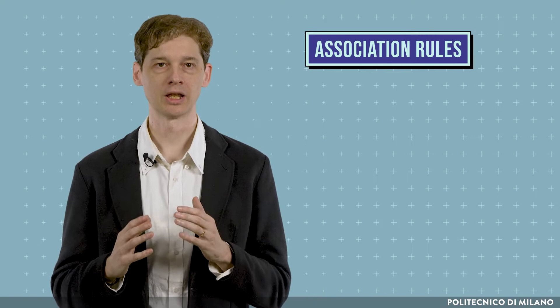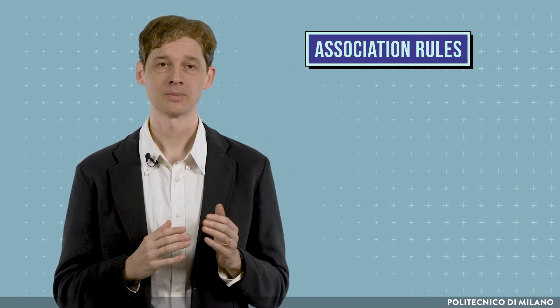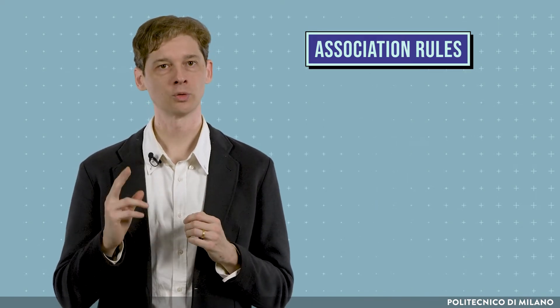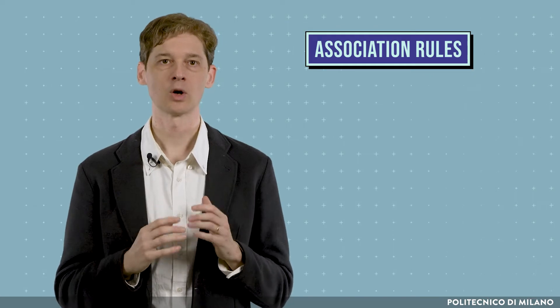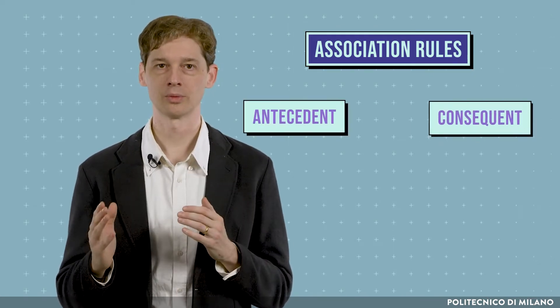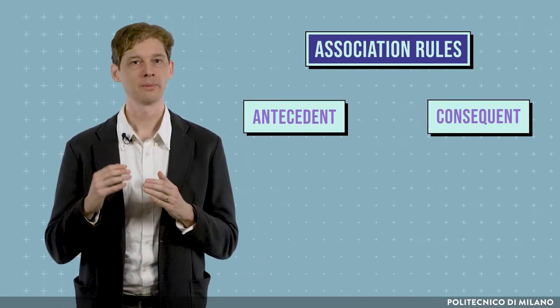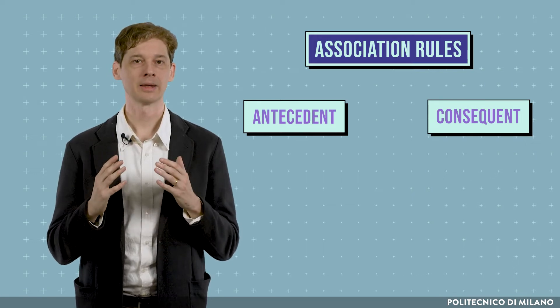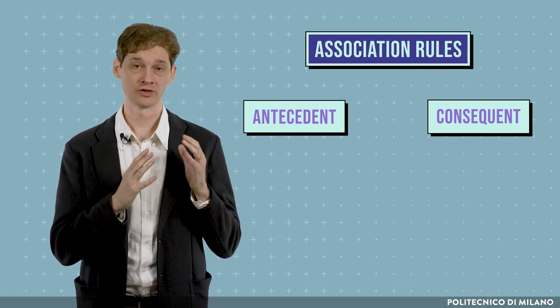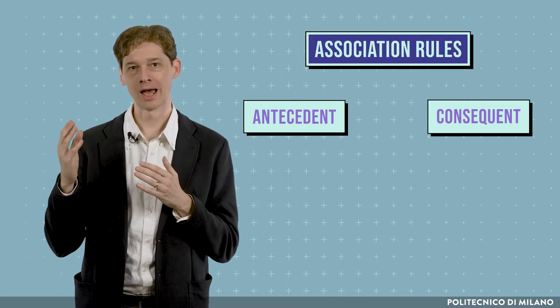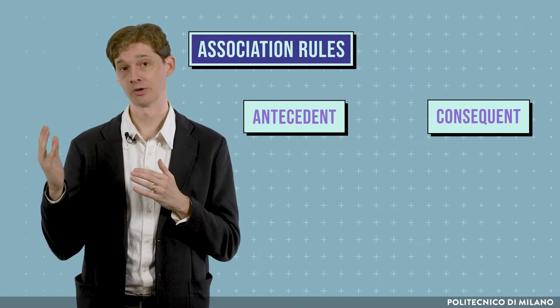Apriori terminates when no more candidate sets can be generated. Once the frequent item sets are determined, the most prevailing association rules can be created and used to benefit the business. Each rule is composed of two different sets of items, called the antecedent and the consequent. The meaning is that when the items in the antecedent are in a transaction, then we expect to find these items also in the consequent.